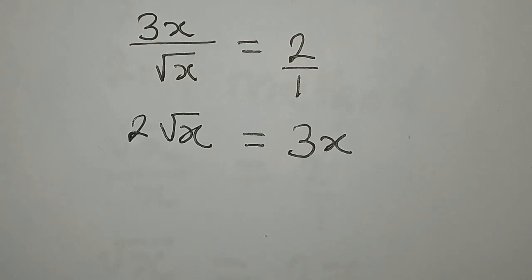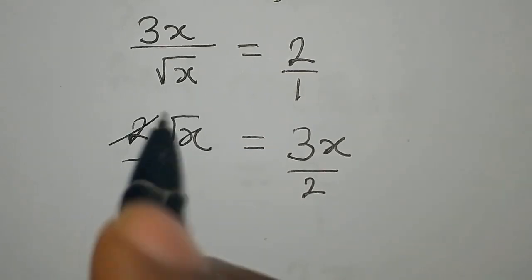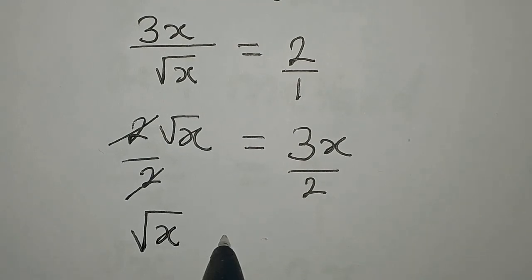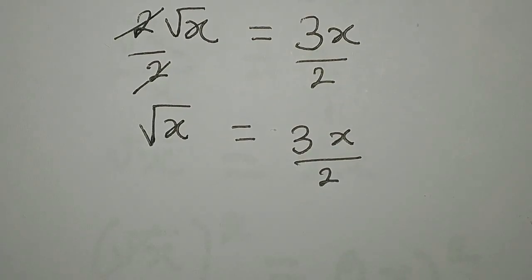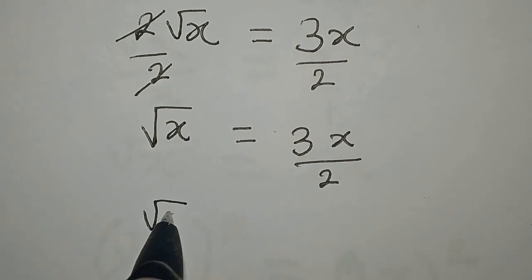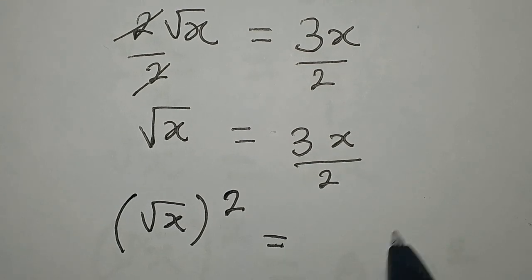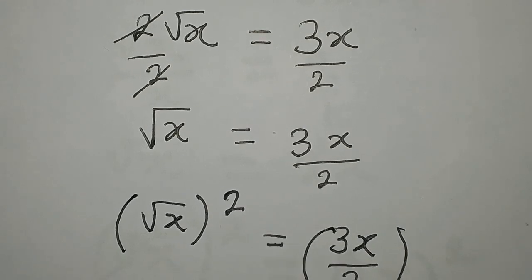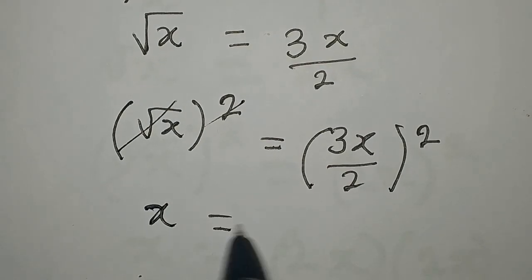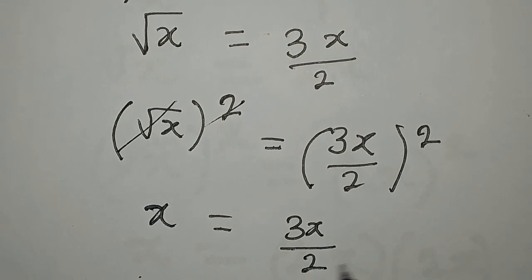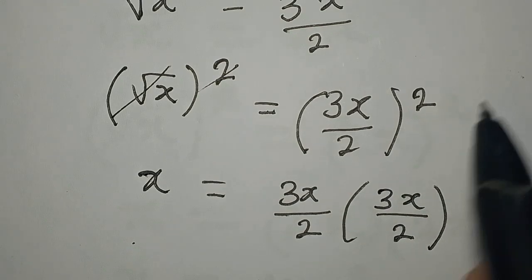The next thing we do is divide both sides by 2. This cancels, so square root of x is equal to 3x over 2. Next, we square both sides — because of the square root here — and the square will reflect on the right side. This and this will cancel, so that x equals 3x over 2 multiplied by 3x over 2. The square means we have this in two places.